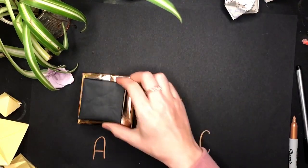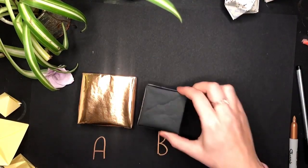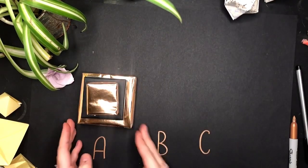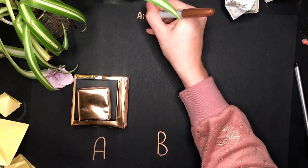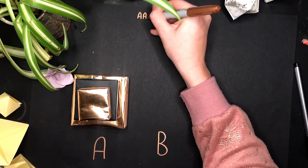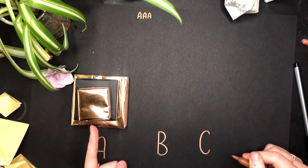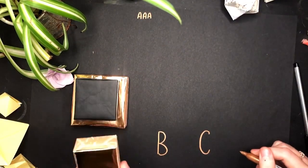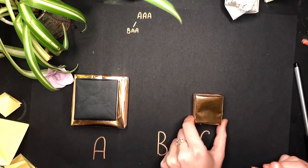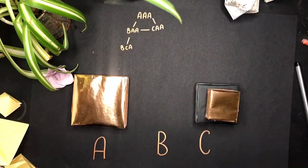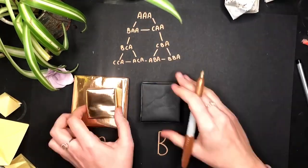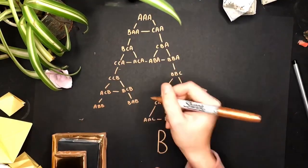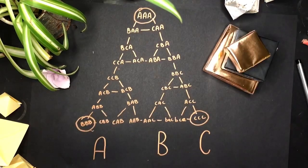You can only move one piece at a time; bigger ones can't go on smaller ones. The aim of the game is to move the whole stack to a different position. At the start, the smallest piece is in position A, the medium also A, and the biggest A — so we'll call this AAA. The options from here are BAA or CAA. For a 3-layer Tower of Hanoi, this is the entire graph showing all possible moves. The solutions are in the corners, and as you can see, it is a Sierpinski triangle!